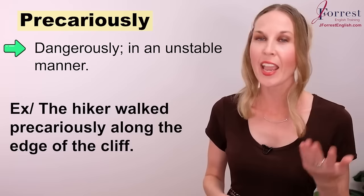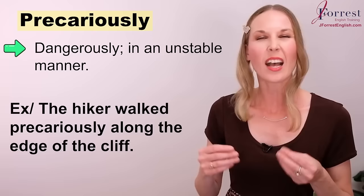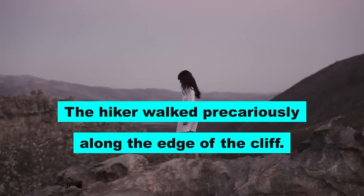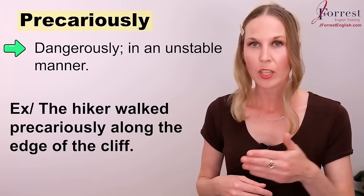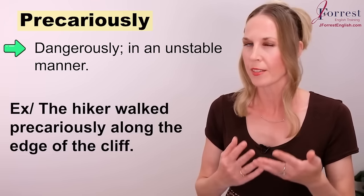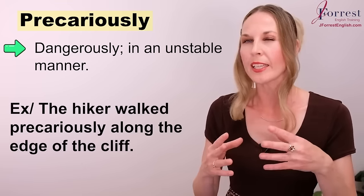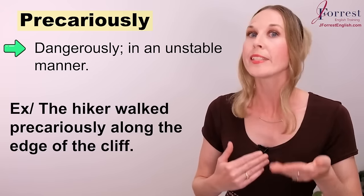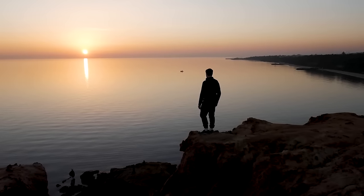Precariously. This means dangerously or in an unstable way. For example: the hiker walked precariously along the edge of the cliff. There's an edge of a cliff — that's already a dangerous situation. But if he's walking precariously, it means he's walking in an unstable way, or a dangerous way — he's extremely close to the edge of the cliff.